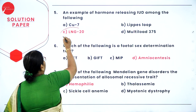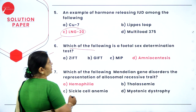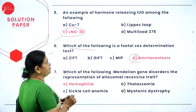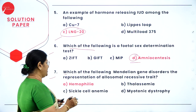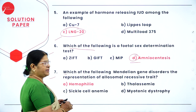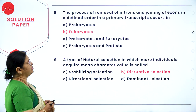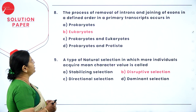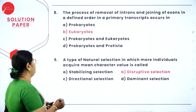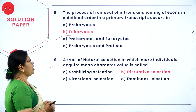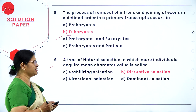Question 6: which is a fetal sex determination test? It is option D — amniocentesis. Question 7: which Mendelian gene disorder shows allosomal recessive trait? Option A is correct — haemophilia. Question 8: removal of introns and joining of exons in a primary transcript occurs in — the answer is B: eukaryotes. Question 9: a type of natural selection in which more individuals acquire mean character value — option B: disruptive selection is the correct answer.